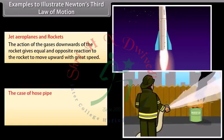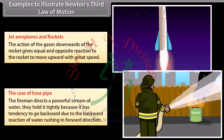The case of hose pipe: The fireman directs a powerful stream of water. They hold it tightly because it has tendency to go backward due to the backward reaction of water rushing in forward direction.